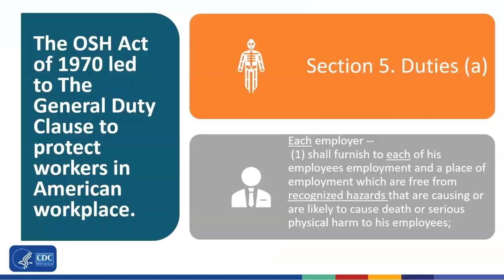The Occupational Safety and Health Act of 1970 established OSHA in the Department of Labor and NIOSH in the Department of Health and Human Services. HHS transferred the Respiratory Protective Device Approval Authority from the Public Health Service to NIOSH at that time. The General Duty Clause made employers responsible for workers' safety and health.